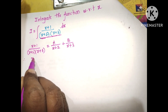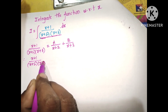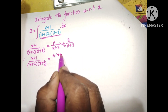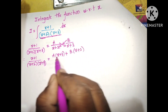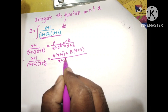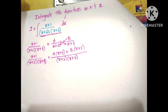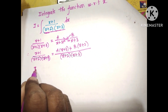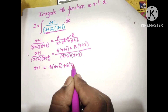So x plus 1 divided by x plus 2 into x plus 3 is equal to A divided by x plus 2 plus B divided by x plus 3. Doing cross multiplication, the denominators cancel, and we get: x plus 1 is equal to A of x plus 3 plus B of x plus 2.